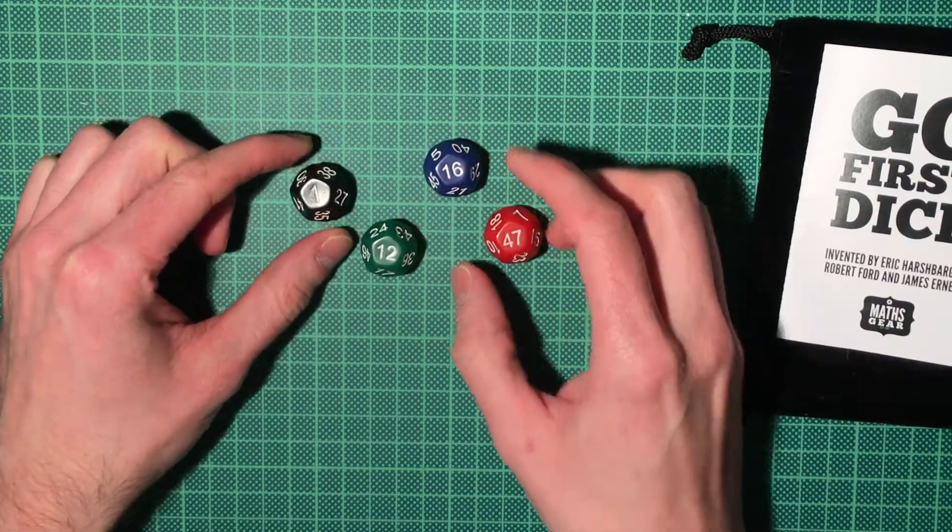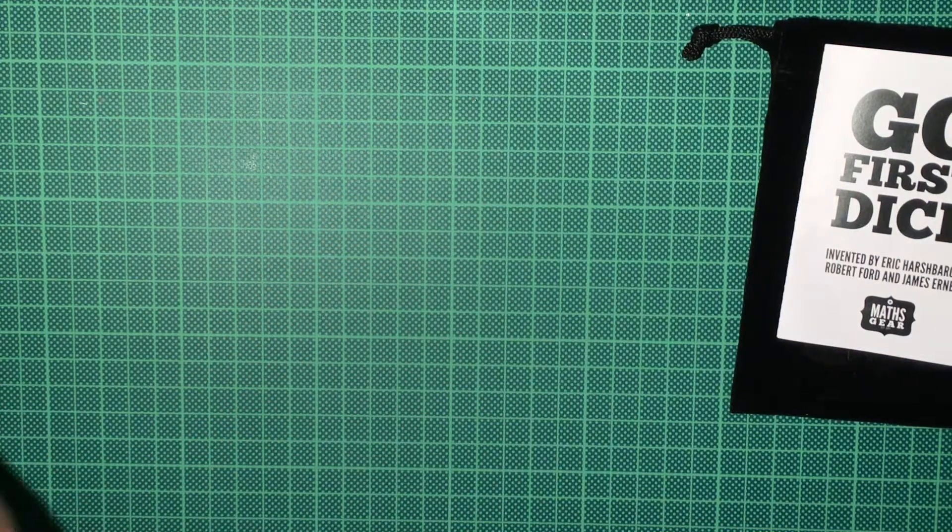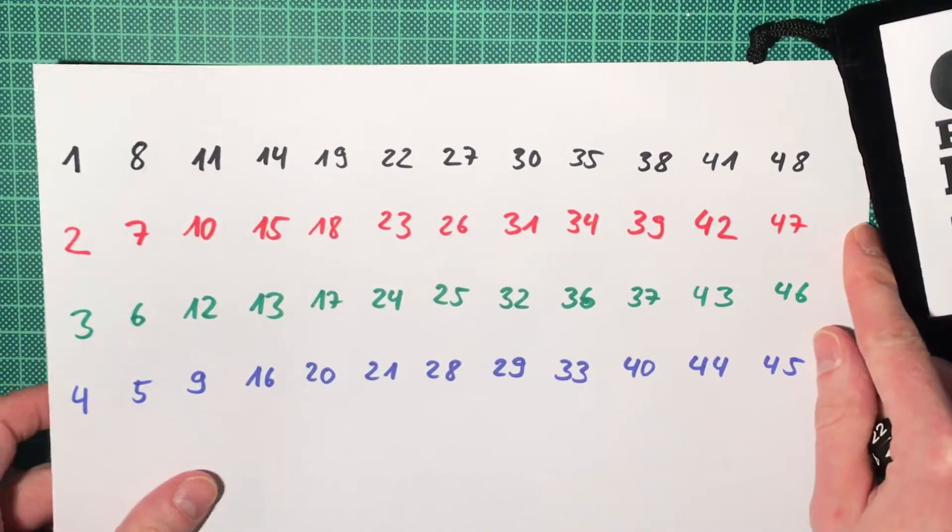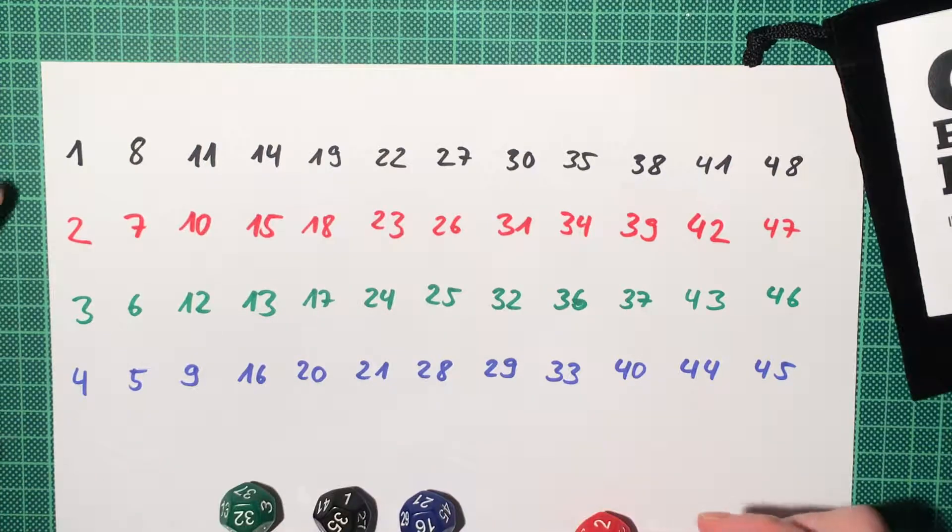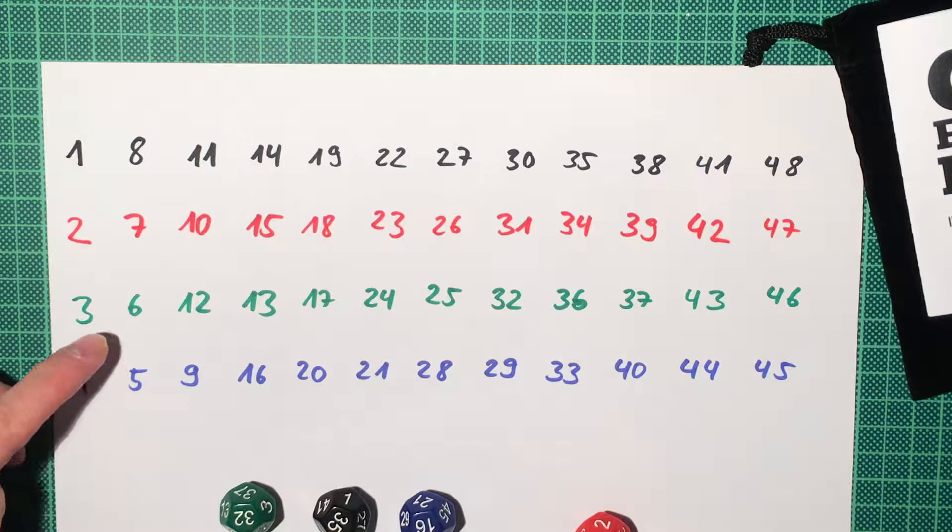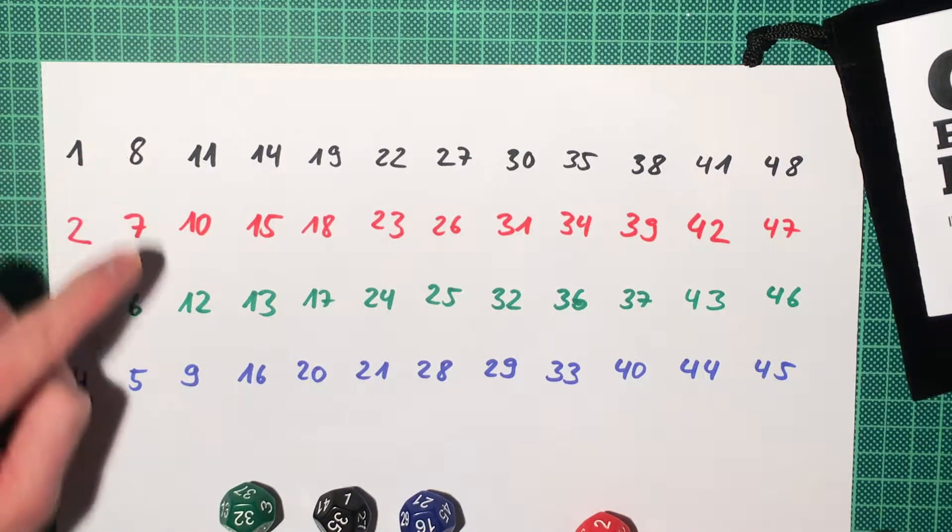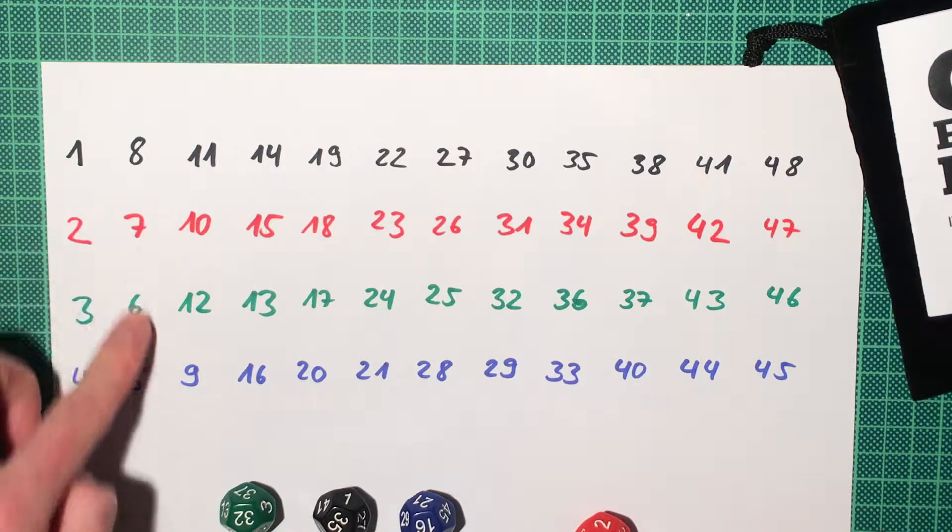The numbers on the dice range from 1 to 48, and I wrote this down here. This is the actual distribution of the numbers for the dice, and you can see that every four numbers are permuted in a different way.